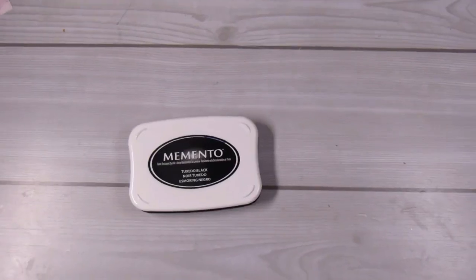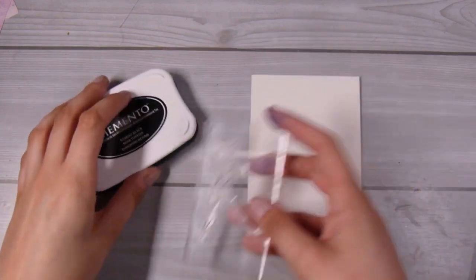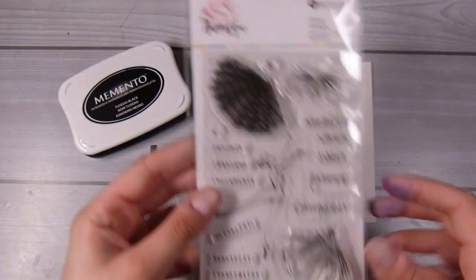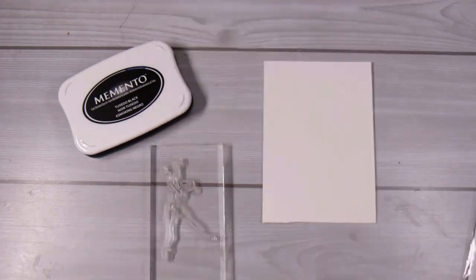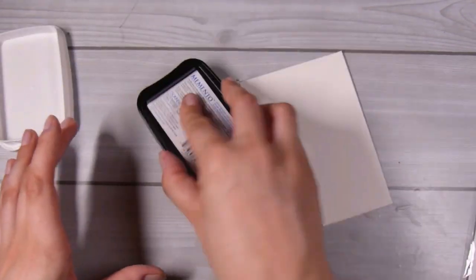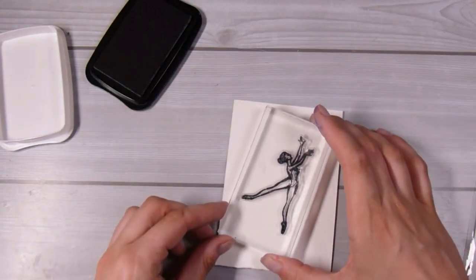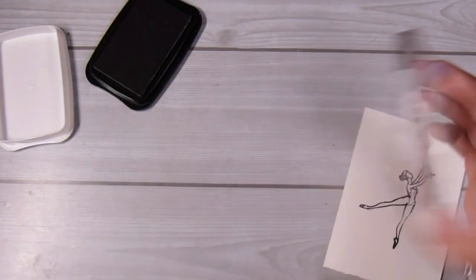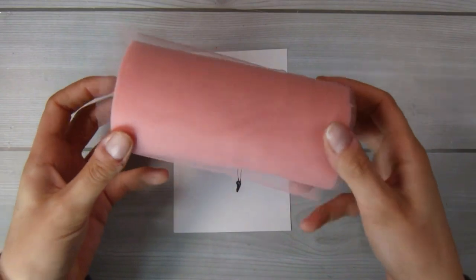My main focus today is this ballerina stamp set with this gorgeous ballerina and I will have the links to everything down below. I am stamping it out in Memento tuxedo black ink because I thought I was going to use my Spectrum Noir alcohol markers but I didn't end up doing that.